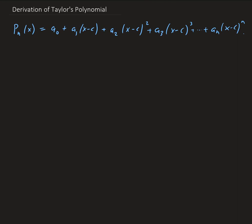Remember the requirements — in the last video, we talked about the requirements to come up with the approximating polynomial of a function. We're going to apply that to this general polynomial, and use it to solve for the coefficients a0, a1, a2, a3, and so on. Once we find those, we'll have our polynomial. We need to take successive derivatives of this polynomial and then equate them to the derivative values of the function.